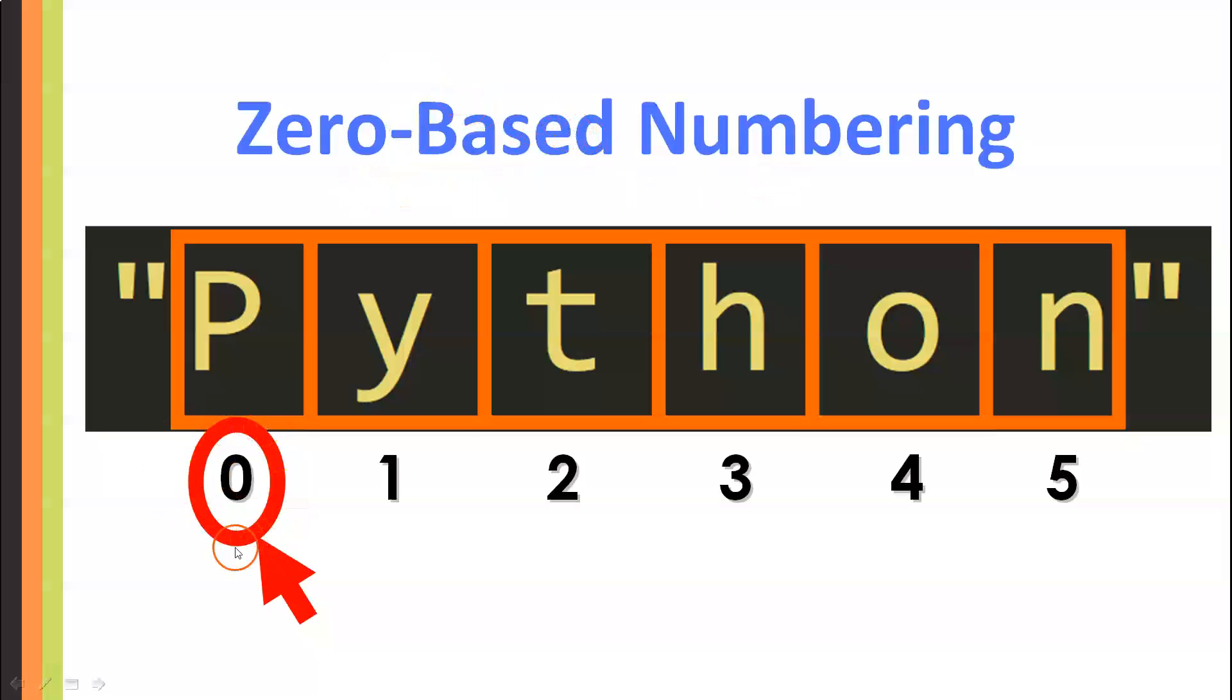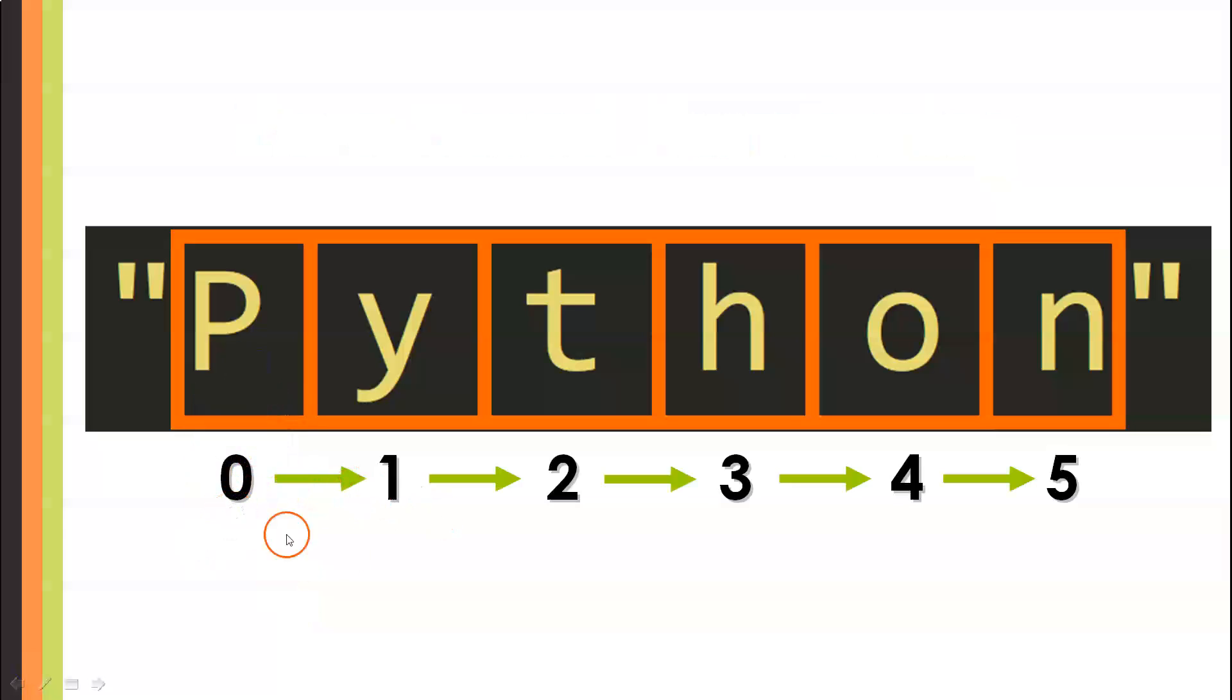This way, the first character of the string is located at index 0. So, we can use this index, the number 0, to access its corresponding character. Then, from that initial index, 0, we add 1 as we move to the right to get the indices of the corresponding characters.